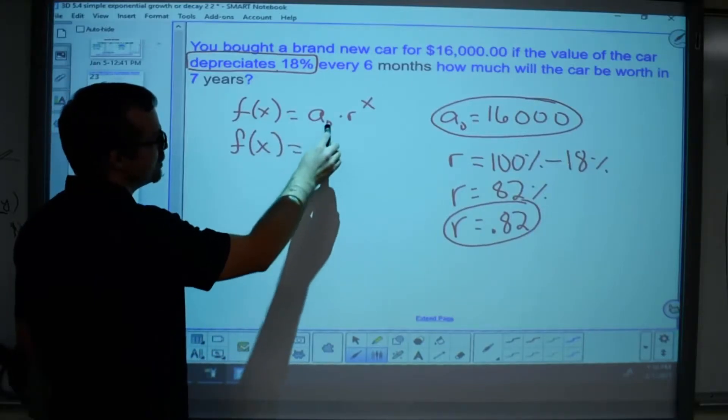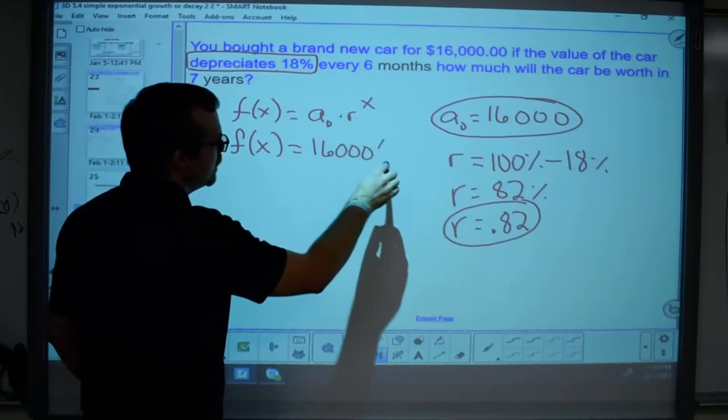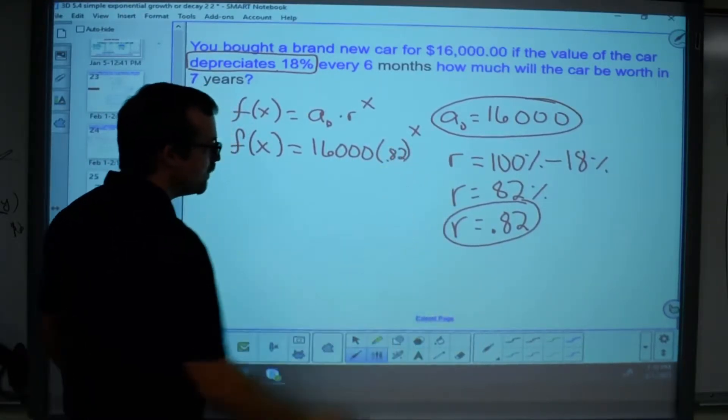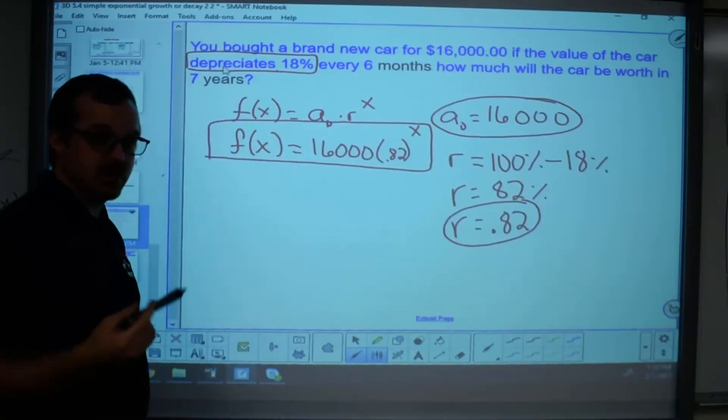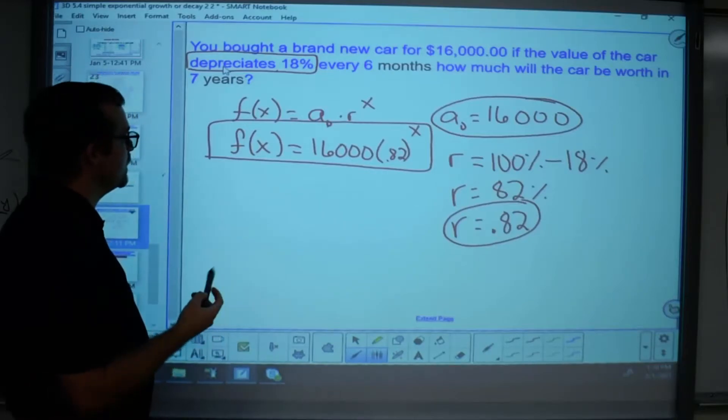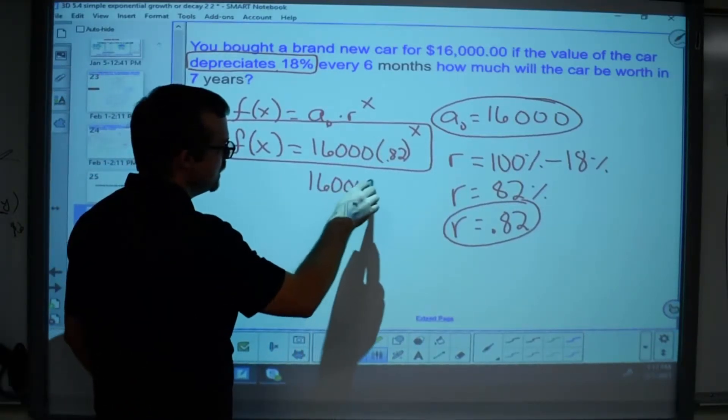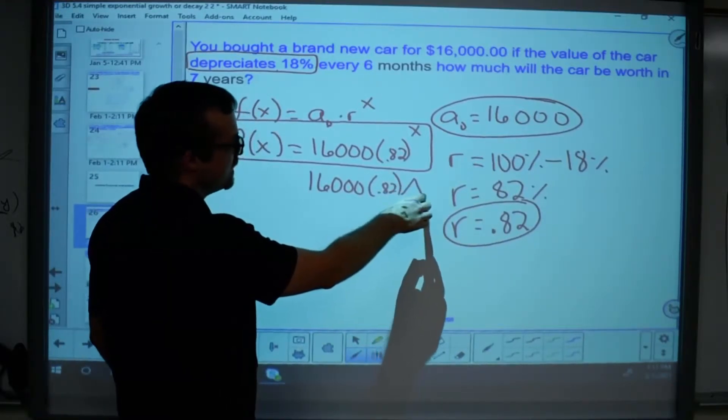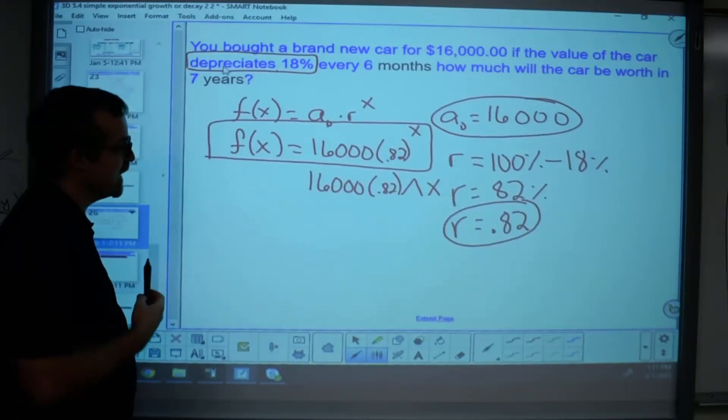It is this, f of x equals my initial amount, which we said is 16,000, times r to the power of x, where the ratio is 0.82. This is the function that you'll need to write into your problem, and you'll see there on my assignment. Remember, to the power of x, you just write it this way, 16,000 times 0.82 to the power of, it's the shift six, that carat sign x, so that's how you write it in your assignment.